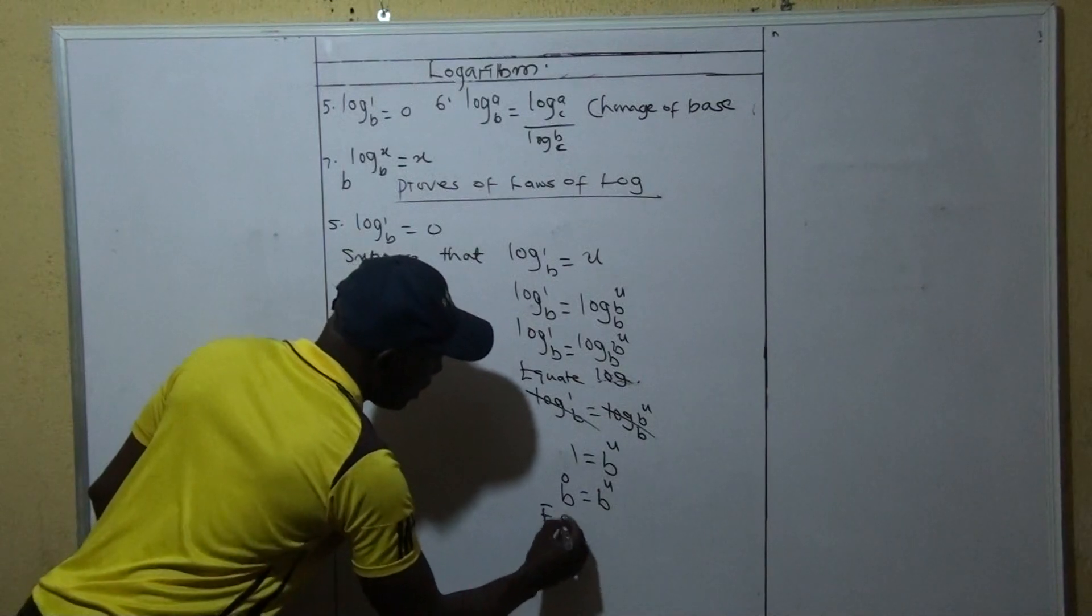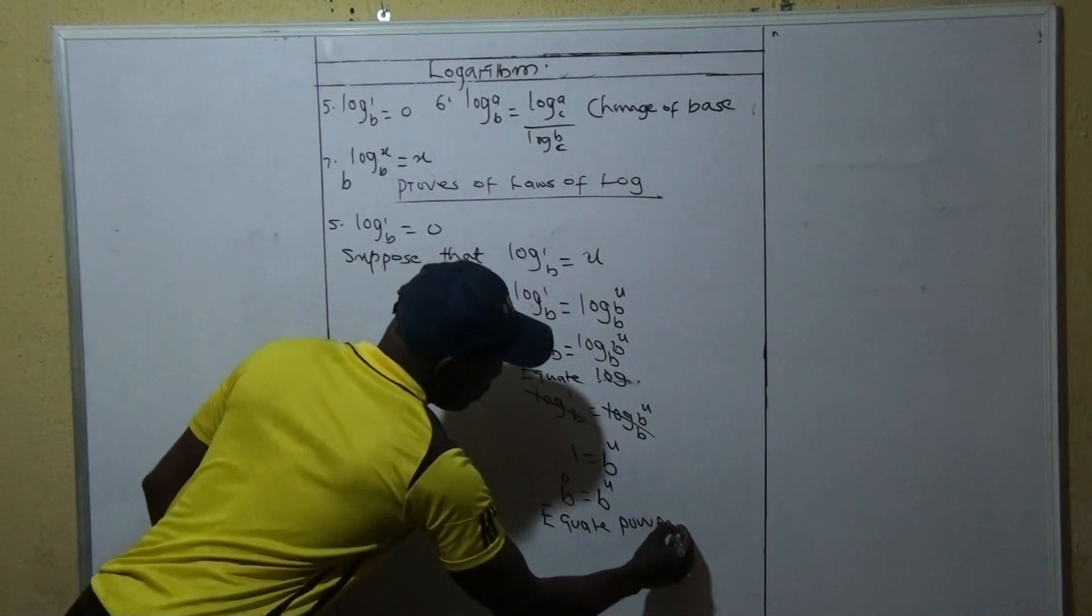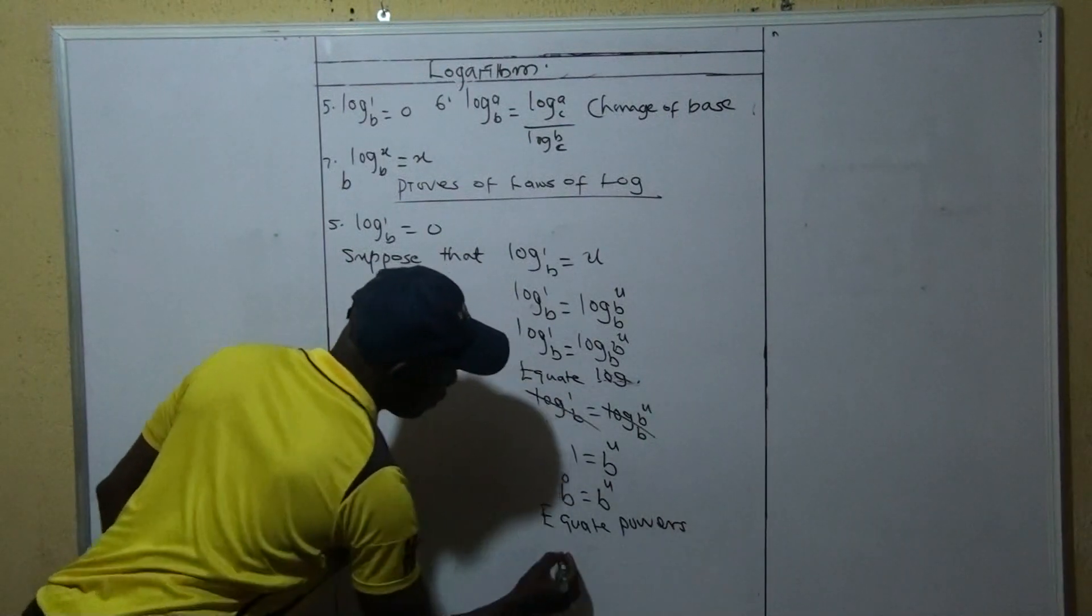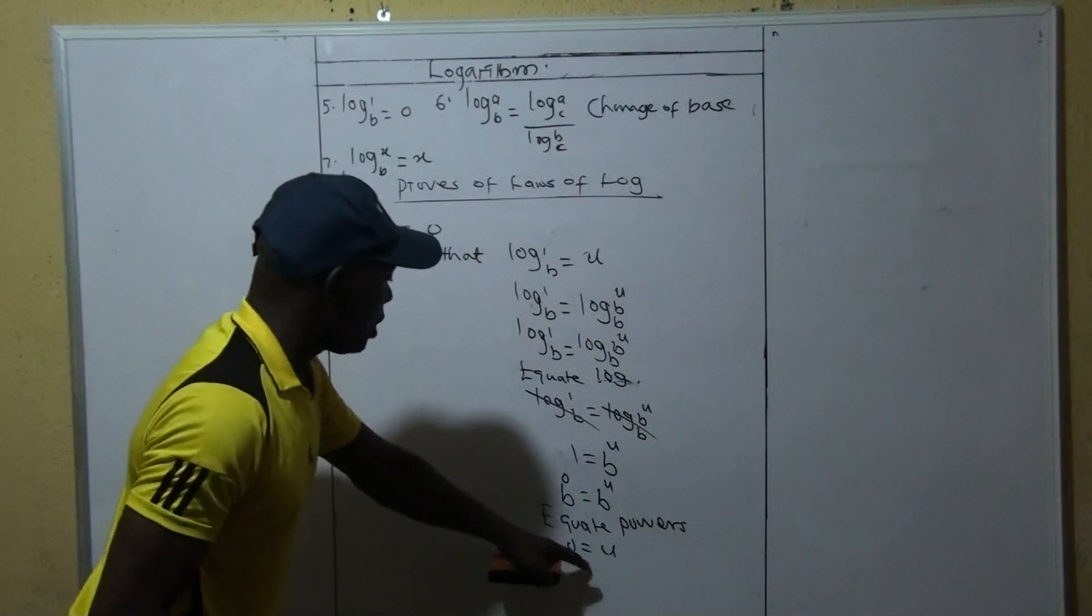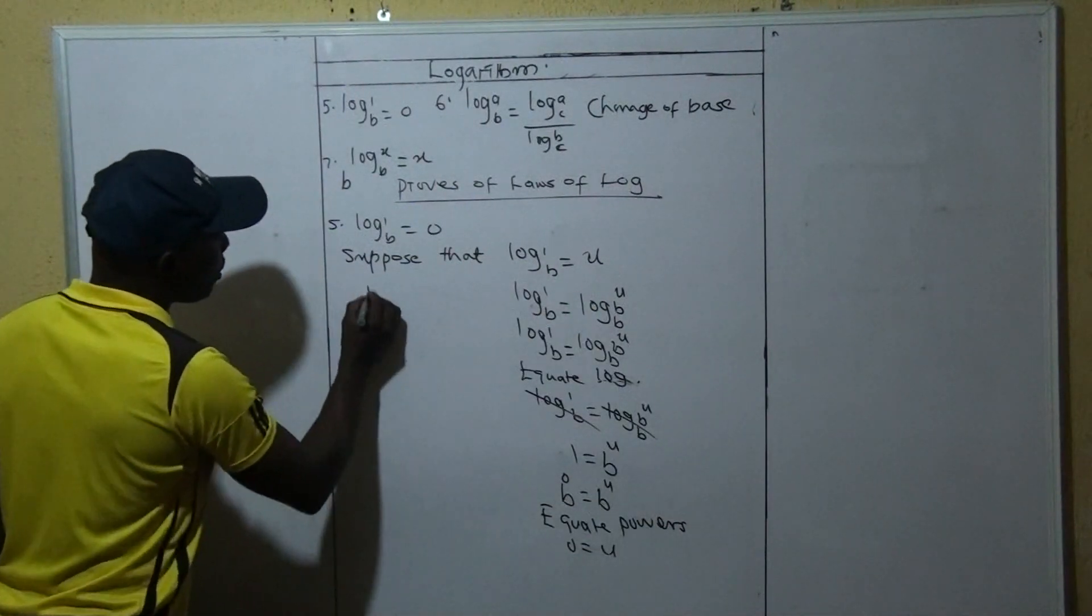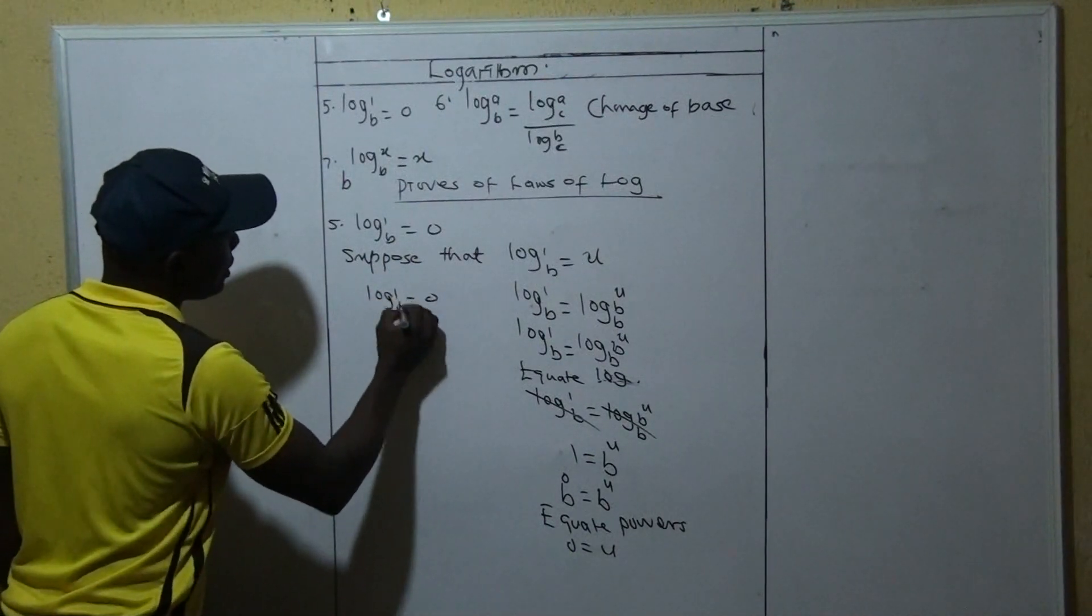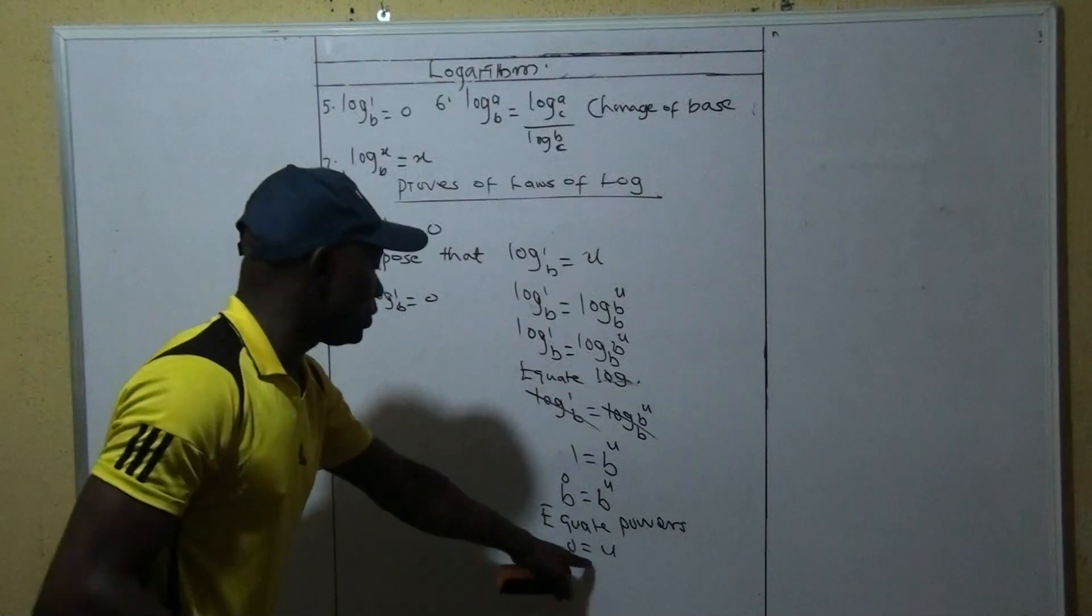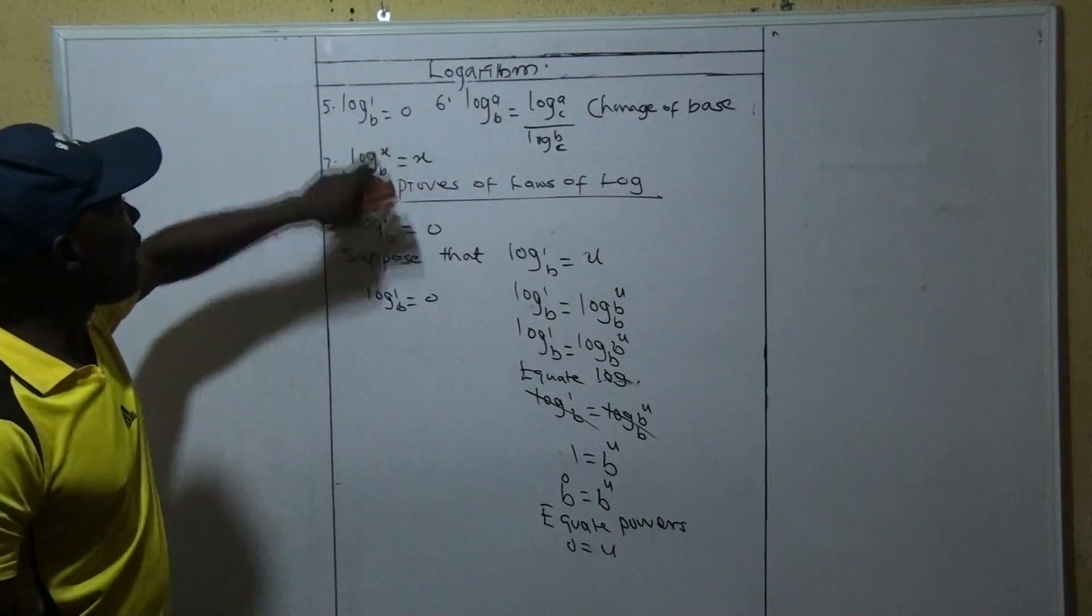So here you equate with powers. So 0 is equal to U. Because already we have said that U is 0, we have said that U is 0. So log 1 to base B is equal to what? Zero. It's equal to U and U is what? Zero. This is the proof, proof 5.